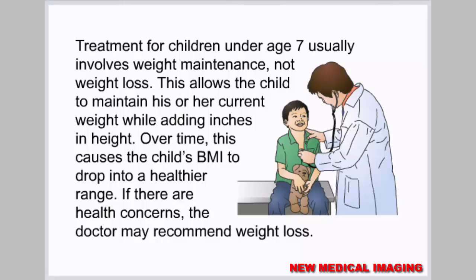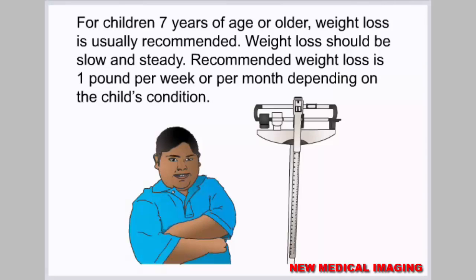Treatment for children under age seven usually involves weight maintenance, not weight loss. This allows the child to maintain his or her current weight while adding inches in height, causing the BMI to drop into a healthier range over time. If there are health concerns, the doctor may recommend weight loss. For children seven years of age or older, slow and steady weight loss is recommended — about one pound per week or per month depending on the child's condition.